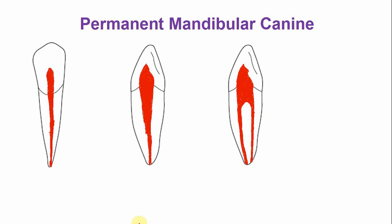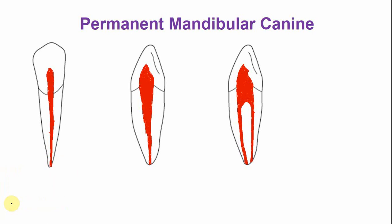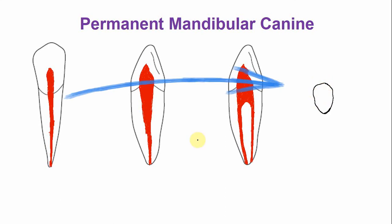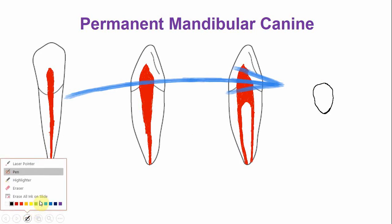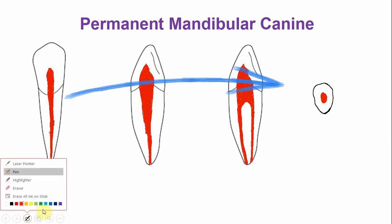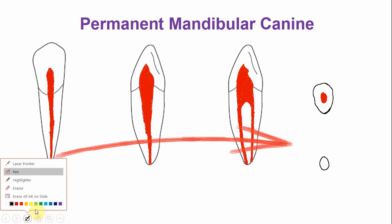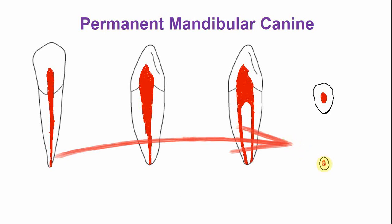The cross-sectional anatomy: in the cross section at the cervical area, the outline of the root is a bit rectangular to oval, and the shape of the canal is usually oval, which is smaller than the maxillary canine, but it is centered within the dentine. In the apical portion of the root, the shape of the root is more rounded, and the canal is also rounded — this is a single canal.